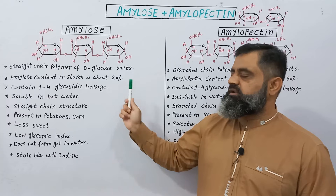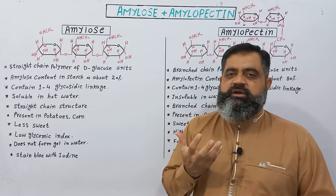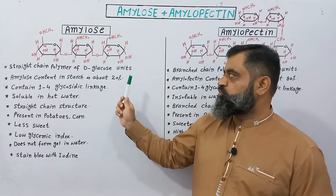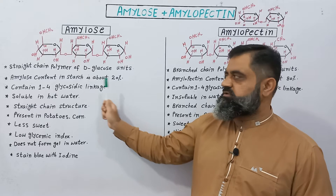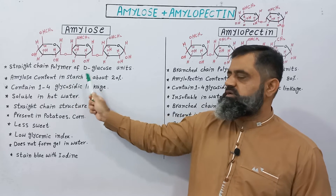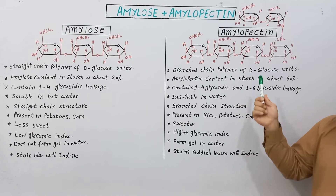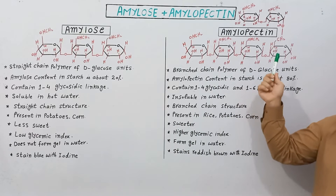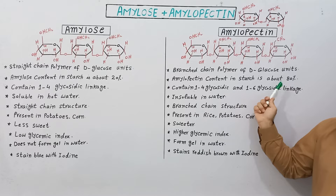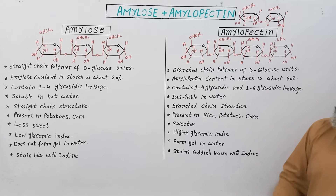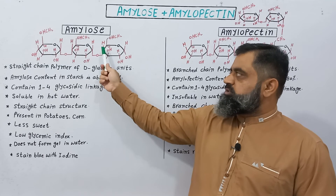Another difference is in their content percentage within starch. Amylose makes up about 20 percent of the starch content, while amylopectin makes up about 80 percent of the starch content.